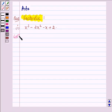Let us start with the solution and let p(x) be the given polynomial which is equal to x cubed minus 2x squared minus x plus 2.